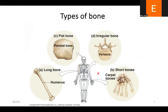Bones can either be long, flat, irregular, or even short. Long bones include the humerus in the arm or the femur, and even the tibia and fibula are also long. Then you have flat bones like that of the skull or cranium — especially parietal bones, which are flat. There are irregular bones like the vertebra. Then short bones like the carpal bones. The different types of bones will also tell you they are going to act differently in terms of how they cause movements, and even joints.